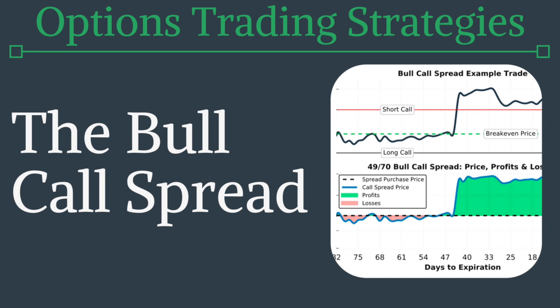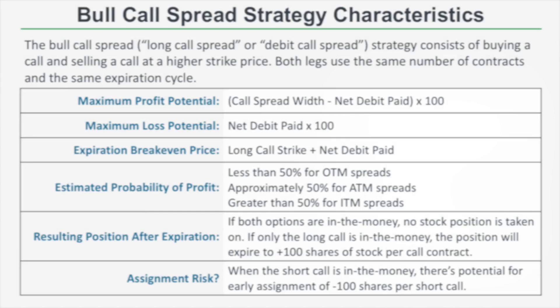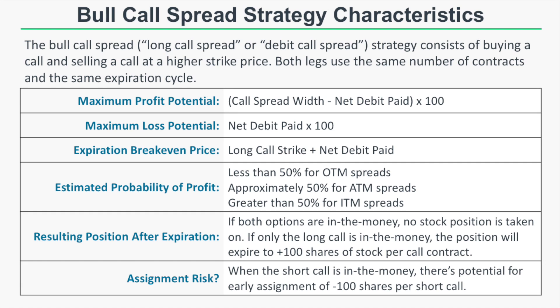Hey everyone, Chris here from Project Option. In this options trading strategies video we're going to talk about the bull call spread. A bull call spread is sometimes referred to as a long call spread or a debit call spread — they're all the same thing. The strategy consists of buying a call and selling a call at a higher strike price than your long call, with both legs using the same number of contracts in the same expiration cycle.